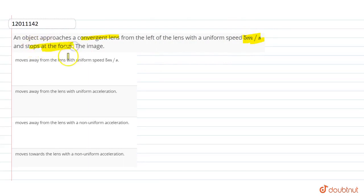The answer options: the image moves away from the lens with uniform speed, moves away from the lens with non-uniform acceleration, or moves towards the lens with non-uniform acceleration.